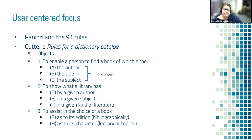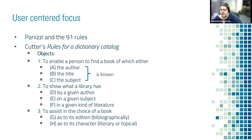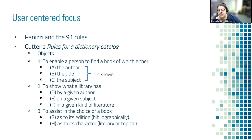Slightly after that, Charles Cutter at the Boston Athenaeum came up with rules for a dictionary catalog. He said that if a person wanted to find a book, he should be able to find it if he knows the author, the title, or the subject. A catalog should show what a library has by a given author, on a given subject, or in a given kind of literature — like what poetry or Western fiction does the library have. And then to assist in the choice of the book as to its edition and its character.